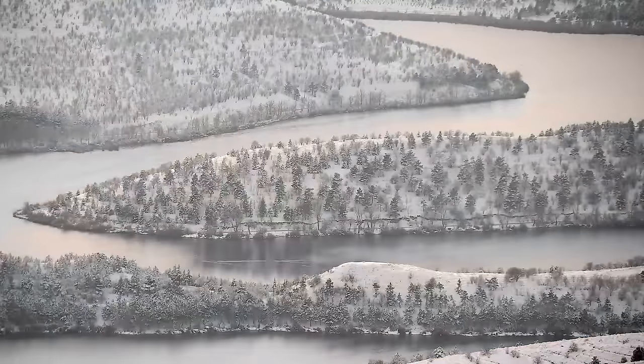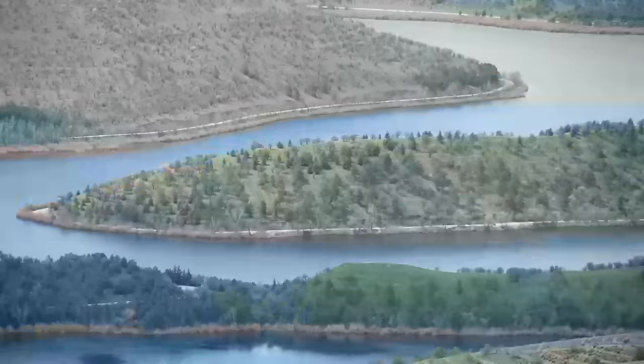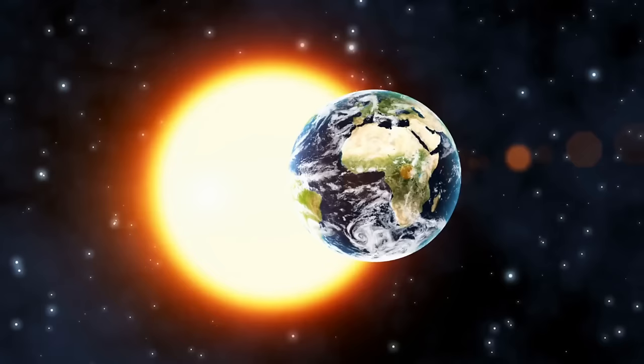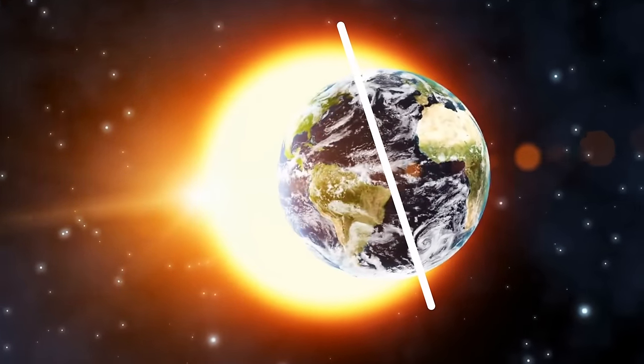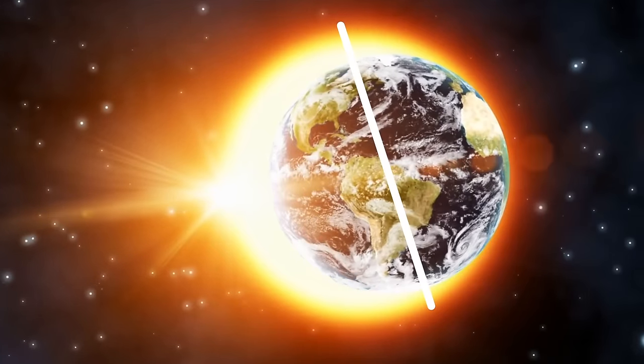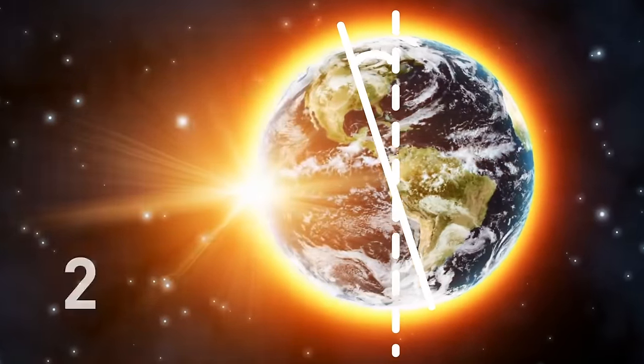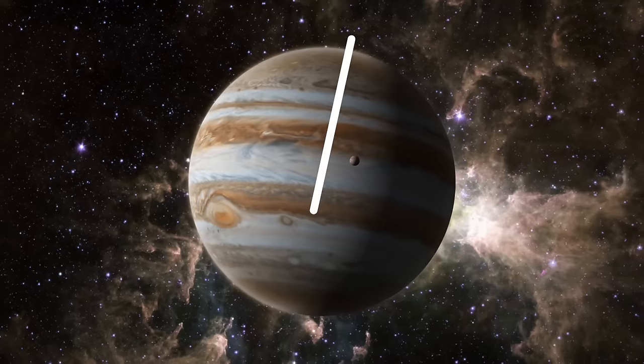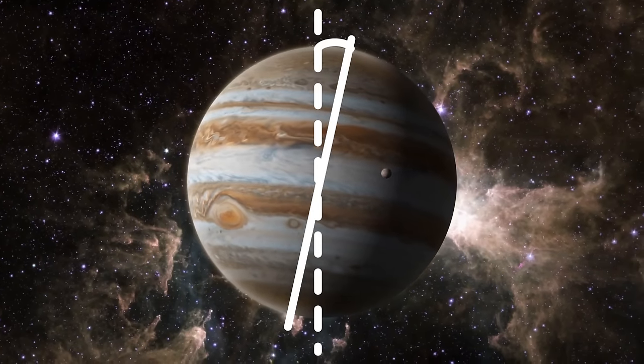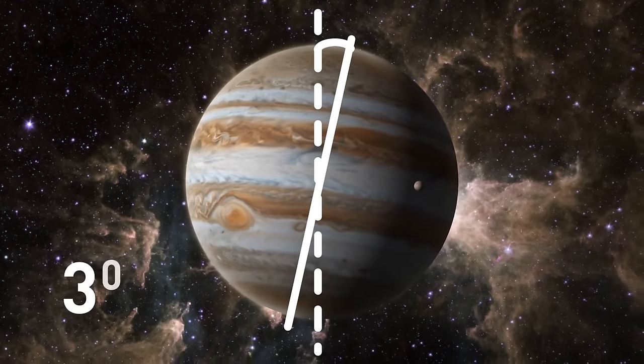On Earth, weather changes between winter, spring, summer, and fall because of the tilt of our planet's axis toward the plane in which it orbits the Sun. This tilt, which is 23 degrees, allows different parts of the globe to receive different amounts of sunlight throughout the year. But Jupiter's axis is tilted toward its orbital plane by a mere 3 degrees.